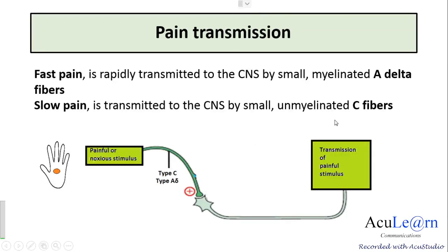Two types of pain we have: fast pain, which is rapidly transmitted to the central nervous system by the small myelinated A-delta fibers. These fibers release the neurotransmitter glutamate. Slow pain is transmitted to the central nervous system by the unmyelinated C fibers, which release substance P.